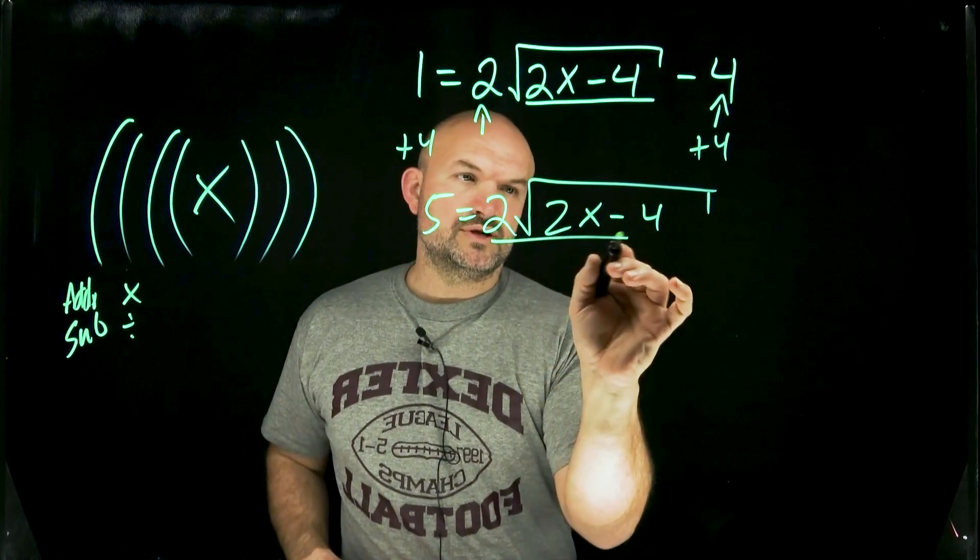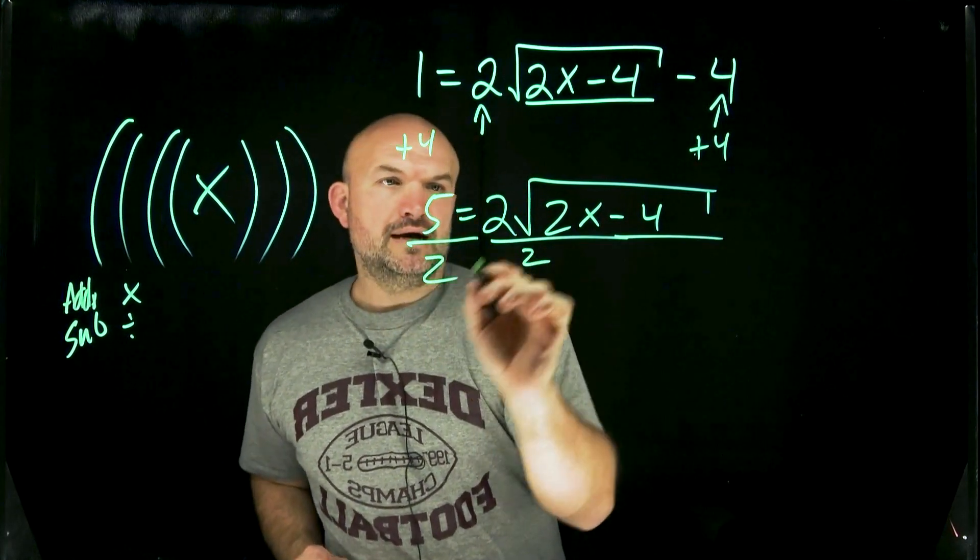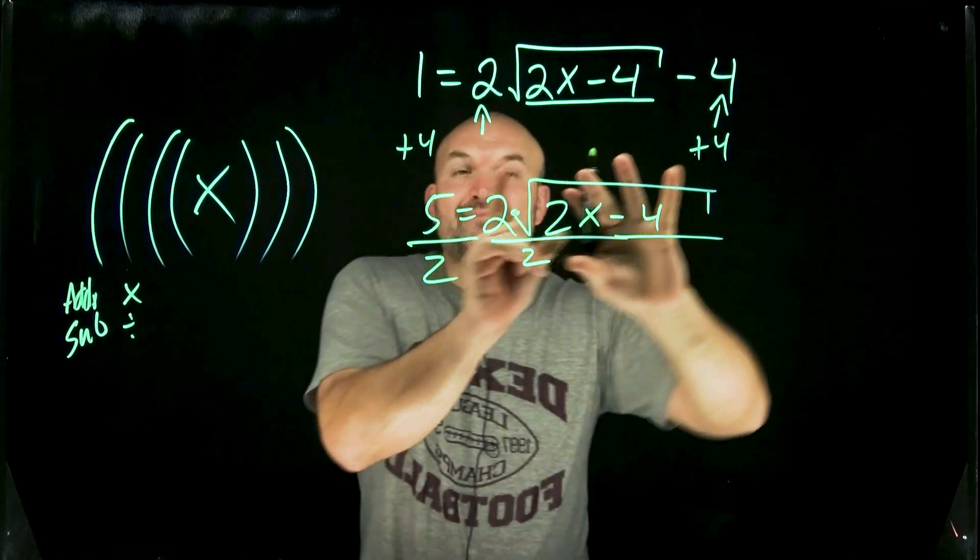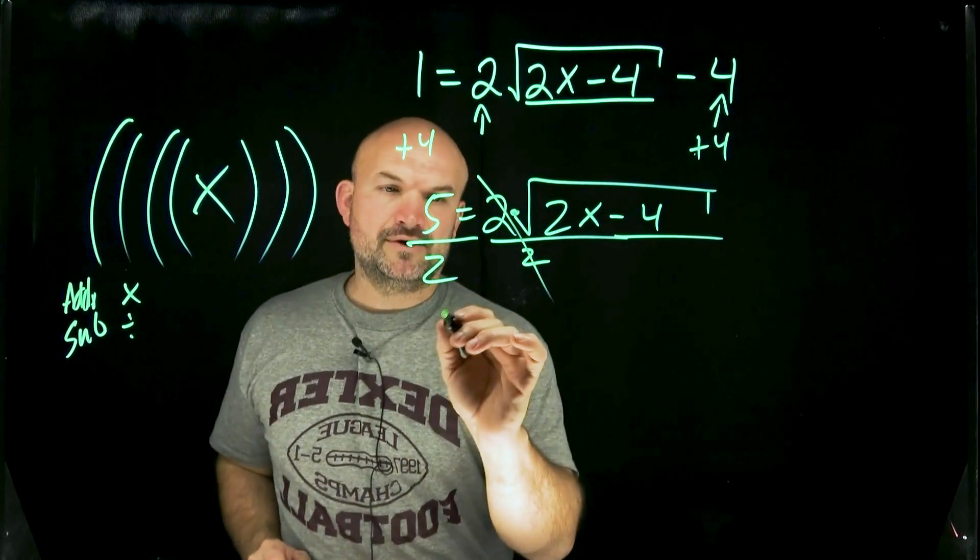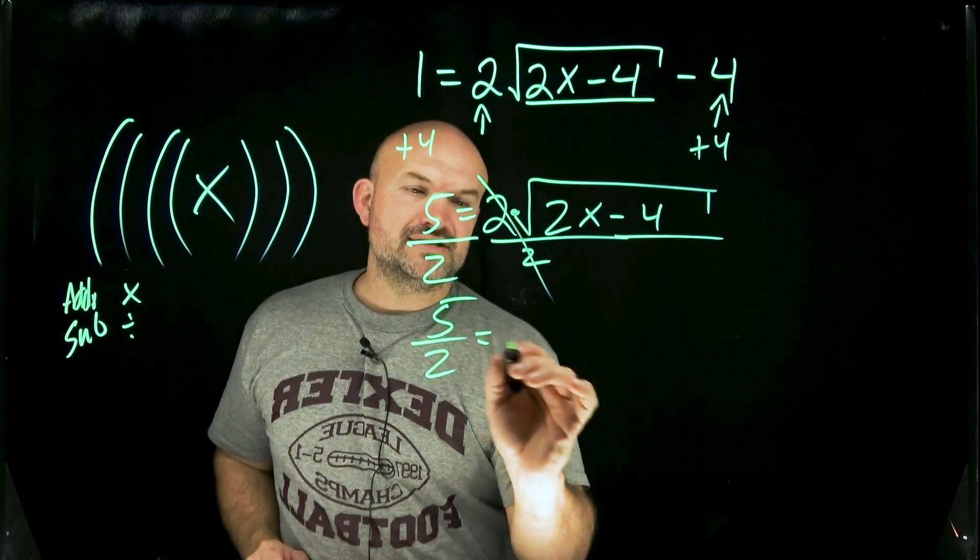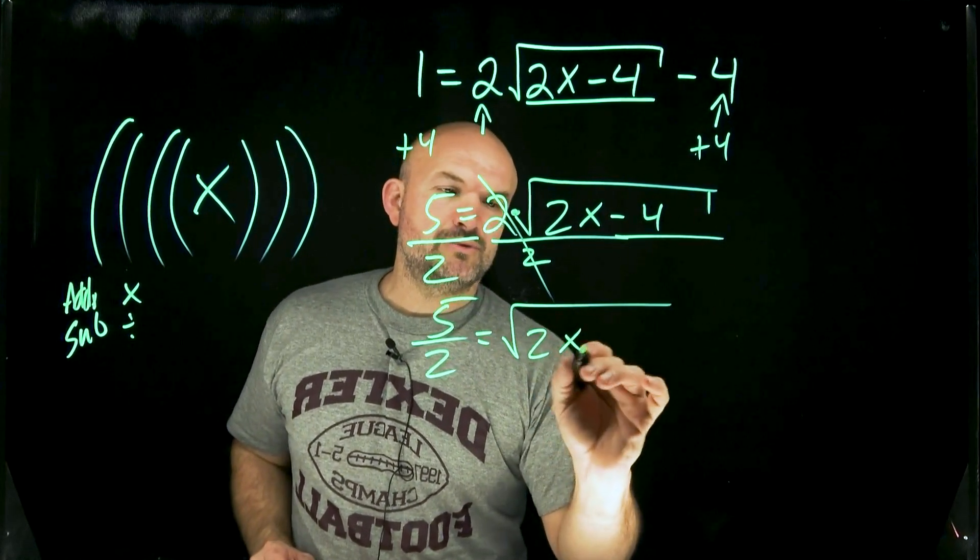Well, in this case, we have a 2. So we're going to go ahead and divide by 2 on both sides. Again, notice that's 2 times this function, the square root of 2x minus 4. So those are only going to divide out. So now I'm left with 5 halves is equal to square root of 2x minus 4.